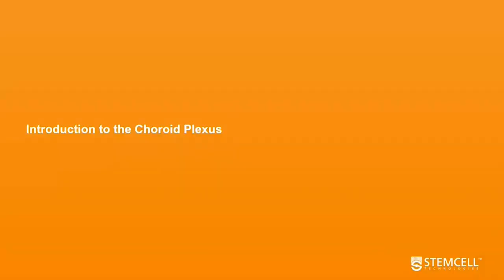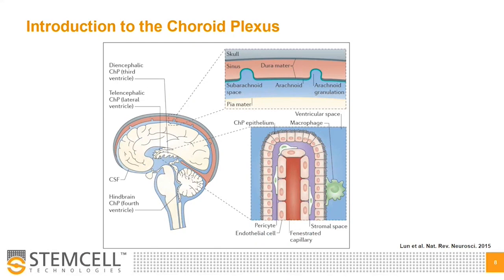I'll be introducing you to the choroid plexus and its function and why you might want to use choroid plexus organoids. The choroid plexus is found deep within the brain, lining the fluid-filled ventricles. It's composed of specialized cuboidal epithelial cells — also called ependymal cells, technically a type of glia — with epithelial characteristics such as apical-basal polarity, cell-to-cell junctions, and cilia. The ependymal cells are surrounded by a capillary system and stroma, and joined together by tight junctions to form the blood-cerebrospinal fluid barrier, preventing free passage of molecules from the systemic circulation of the blood into the CSF. The choroid plexus also contains an immune cell component of macrophages and is considered a gateway for immune cell entry into the brain.